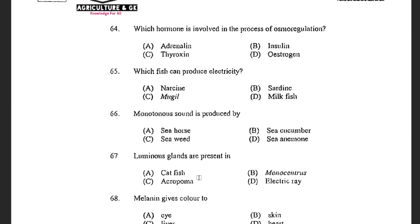Next question: Which hormone is involved in the process of osmoregulation? Options are Adrenaline, Insulin, Thyroxine, and Estrogen. The answer is Adrenaline. Adrenaline is involved in the osmoregulation process. Insulin is involved in glucose control. Thyroxine is involved in digestion, heart and muscle formation, and maintenance of bones. Estrogen is known as the female sex hormone.